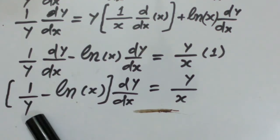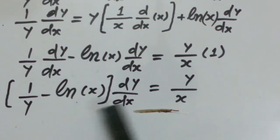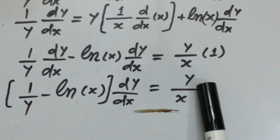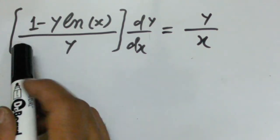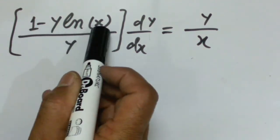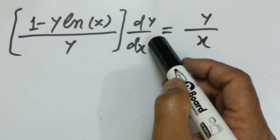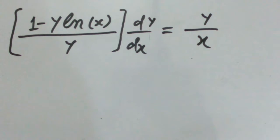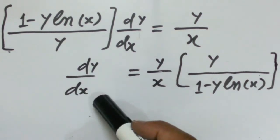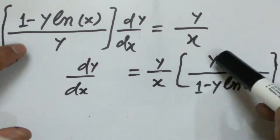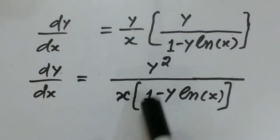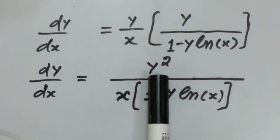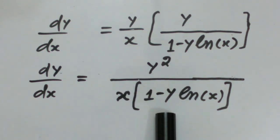Taking (dy/dx) common from these two terms, we get: (1/y − ln(x)) · (dy/dx) = y/x. After rearrangement: (1 − y·ln(x))/y · (dy/dx) = y/x. Therefore, dy/dx = (y/x) · (y / (1 − y·ln(x))), which simplifies to y² / (x · (1 − y·ln(x))). This is our required answer.